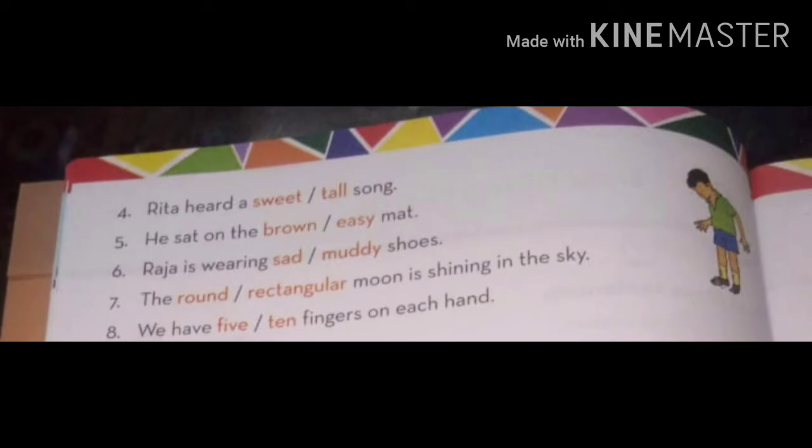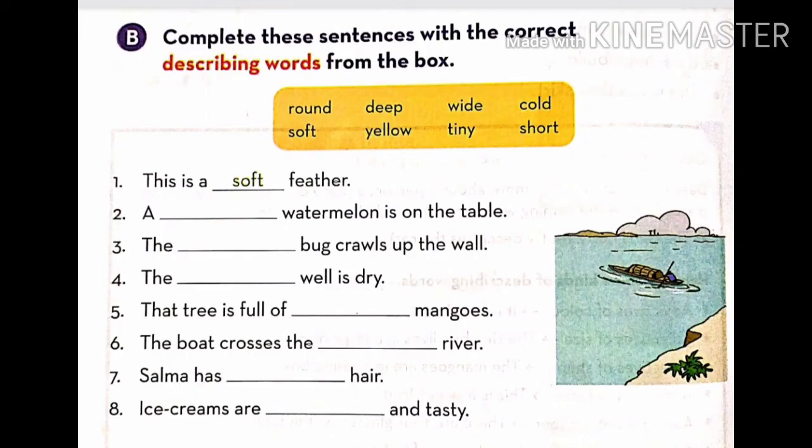Now see subpart B. Question says, complete these sentences with the correct describing words from the box. There are some words given students. You will have to choose that correct word and fill in the blanks. First one is already done.